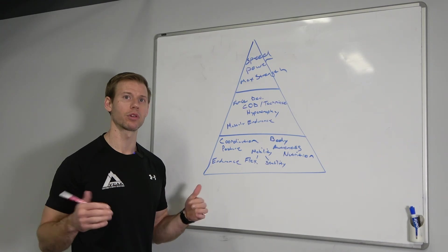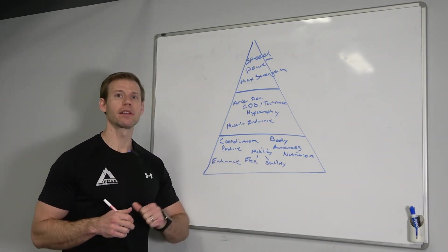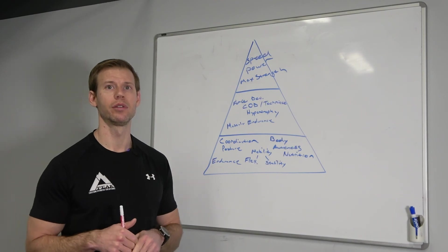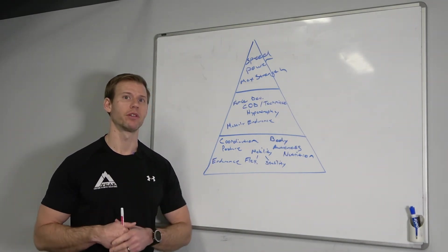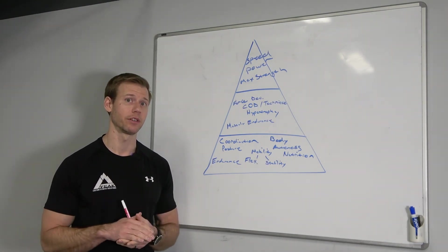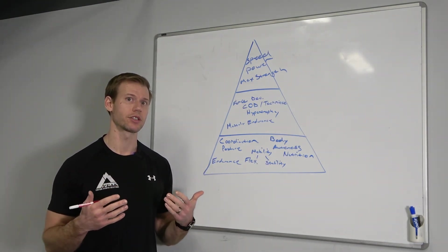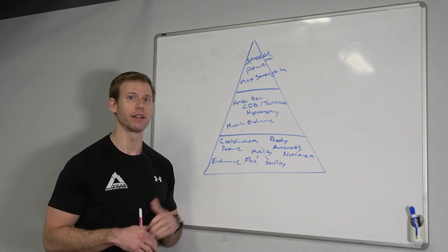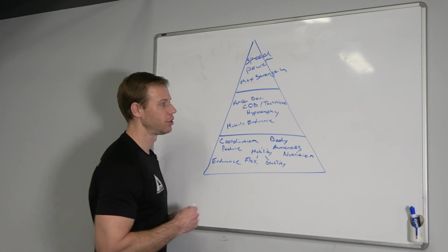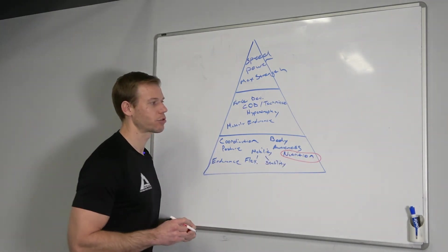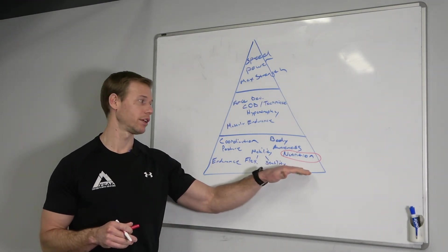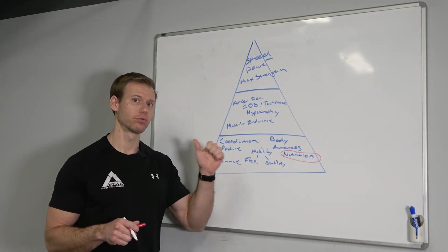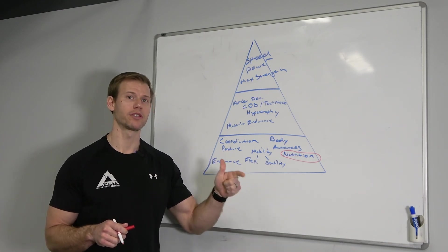Body awareness is another essential foundation — understanding where your feet and hands are. As athletes grow through growth spurts, they lose coordination. We all know the athlete who was outstanding in seventh grade, grew six inches, and suddenly became the clumsiest kid on the field because their strength-to-weight ratio changed dramatically. Body awareness needs to be trained at any age and level. Nutrition is also huge and critical at any age — the earlier we get on board with proper nutrition and healthy eating habits, the easier it is for that athlete to recover and fuel appropriately.